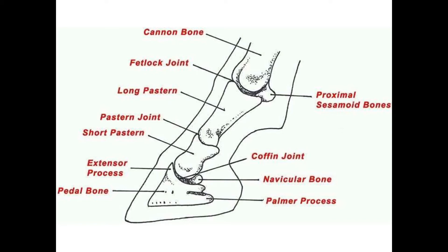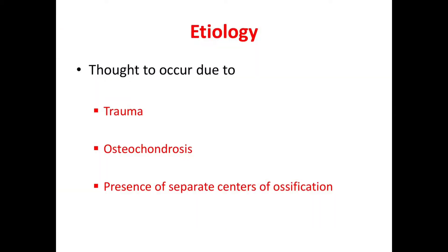Coming to the etiology, pyramidal disease or buttress foot — the fracture of the extensor process of the distal phalanx — can occur due to trauma, osteochondrosis, or the presence of separate centers of ossification.